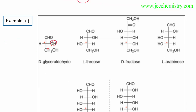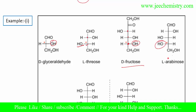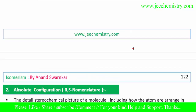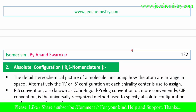If the OH group is on the left side at the highest-numbered chiral center, then the configuration will be L. For compounds with only one chiral center, we consider that one. For compounds with two chiral centers, we consider the last (highest-numbered) chiral center. If OH is on the right side it is D; if on the left side it is L. Now we have learned DL relative configurations, and next we will learn about absolute configurations.